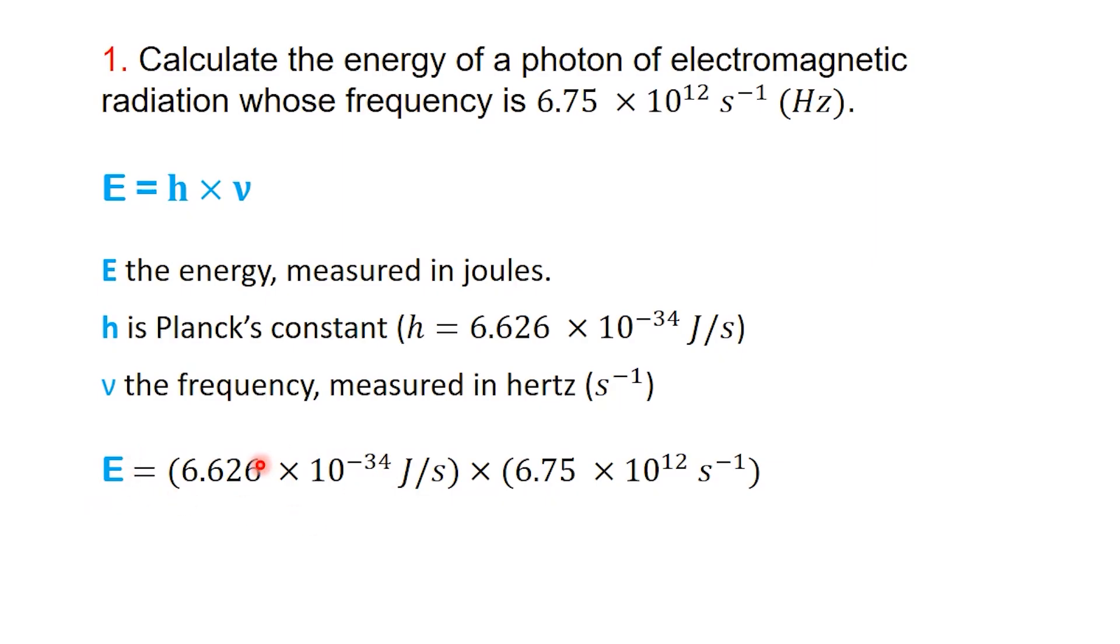Now we substitute directly. E equals 6.626 times 10 to the minus 34 joule seconds times 6.75 times 10 to the 12 per second. When we multiply, the seconds in joule seconds and the per second from the frequency cancel out. That leaves us with only joules as the unit, which makes sense because energy is measured in joules. Carrying out the multiplication in one step, we get E equals 4.47255 times 10 to the minus 21 joules.